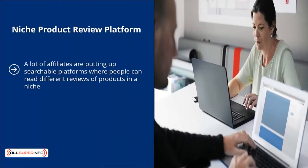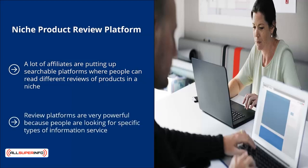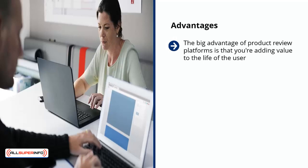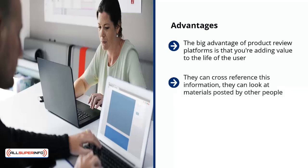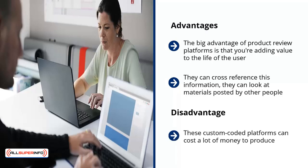Niche product review platform. A lot of affiliates are putting up searchable platforms where people can read different reviews of products in a niche, cross-reference products, and browse travel destinations or restaurants. A good example is TripAdvisor. Advantages: you're adding real value — users can cross-reference information and view material posted by others, which creates a community around content. Disadvantages: these custom-coded platforms can cost a lot of money to produce; you need special coding and a robust content management system beyond just WordPress.